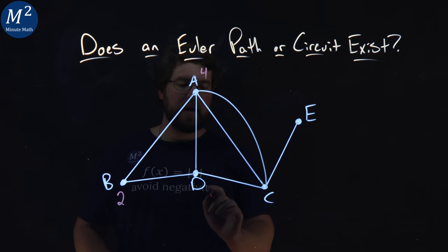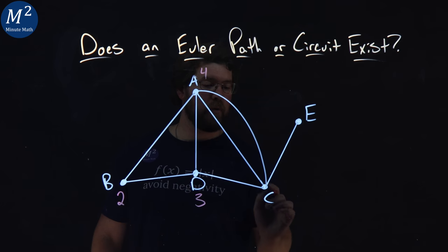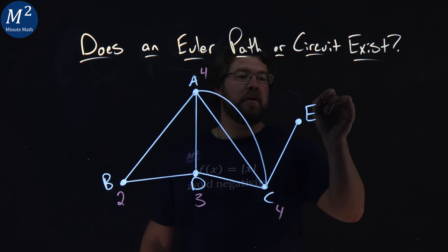D has one, two, three edges, degree three. C is one, two, three, four edges, and E has only one edge, so it's degree one.